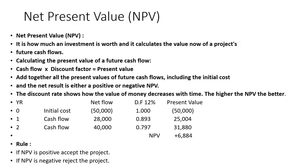The discount factor in year 0 is always 1, so 1.00 multiplied by negative $50,000 gives a present value of negative $50,000. Year 1 cash flow is $28,000. The Year 1 discount factor at 12% from the present value table is 0.893. Multiplying $28,000 by 0.893 gives $25,000 as the present value.